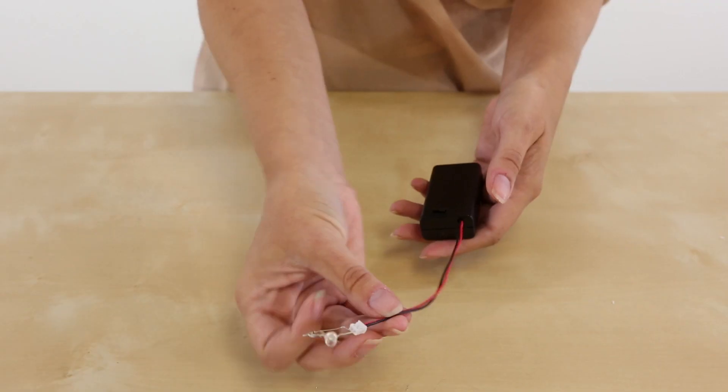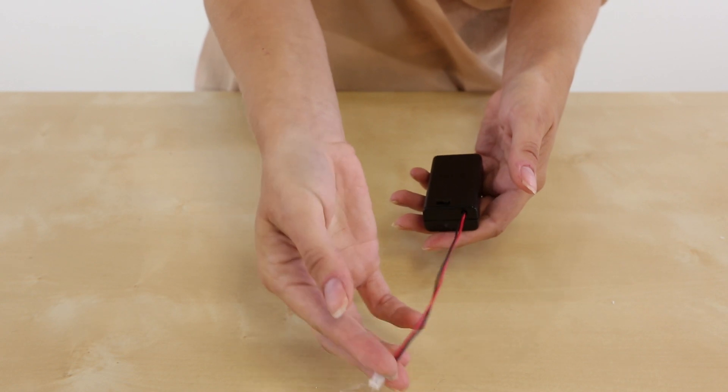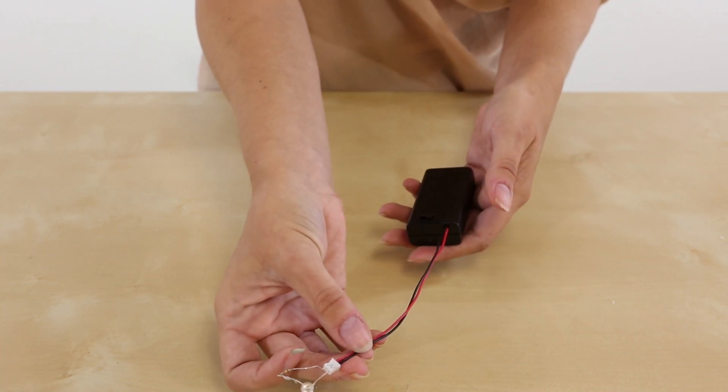For a long-term application, you're probably going to want to just snip the wire, solder that together, and heat shrink it.